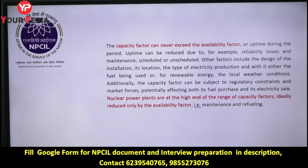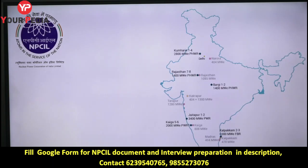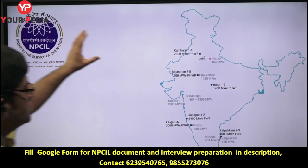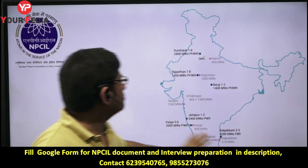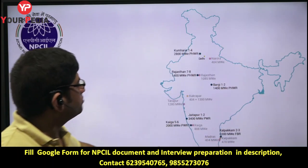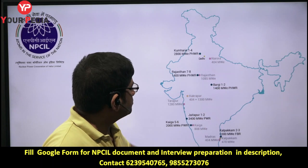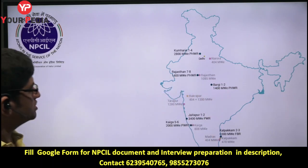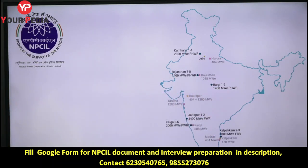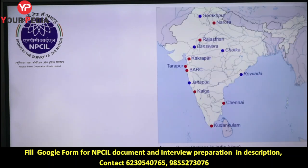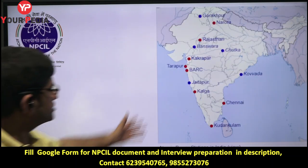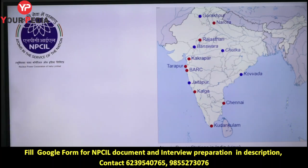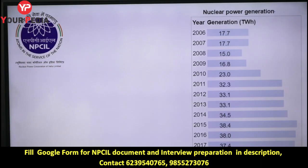Revise capacity factor and availability factor thoroughly. Go through a map and see where different plants are: Narora — where is it? Rawatbhata — where is it? Kakrapar — where is it? Jaitapur — where is it? Kalpakkam — where is it? Kudankulam — where is it? You should know all these locations. These show active plants and plants where new construction is planned. Nuclear power generation has increased over the years.